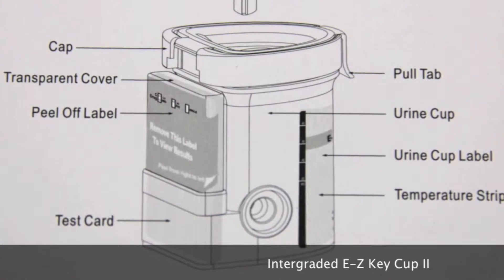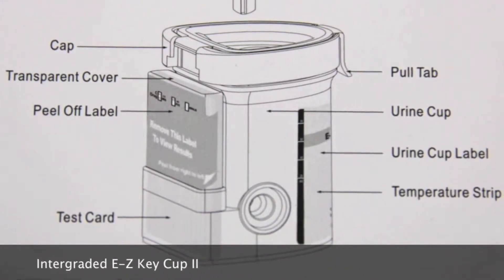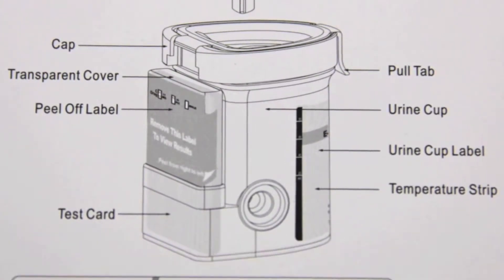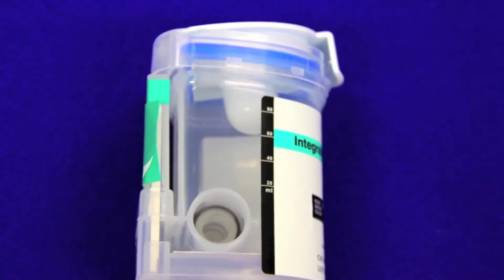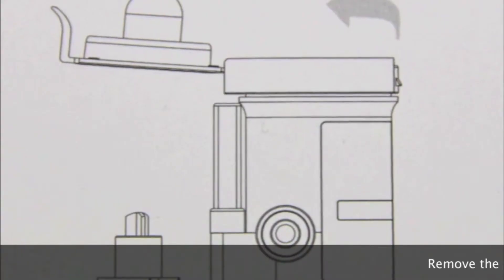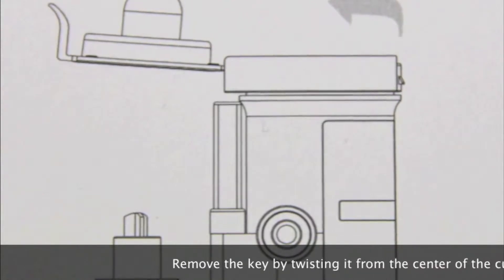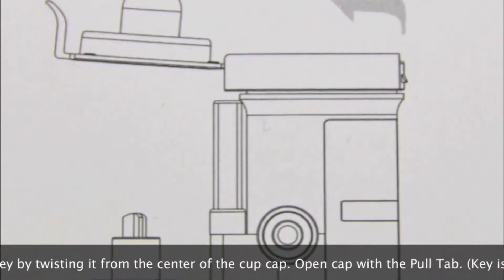The Integrated Easy Key Cup 2. Remove the key by twisting it from the center of the cap. Open the cap by using the pull tab on the cap while the technician holds the key.